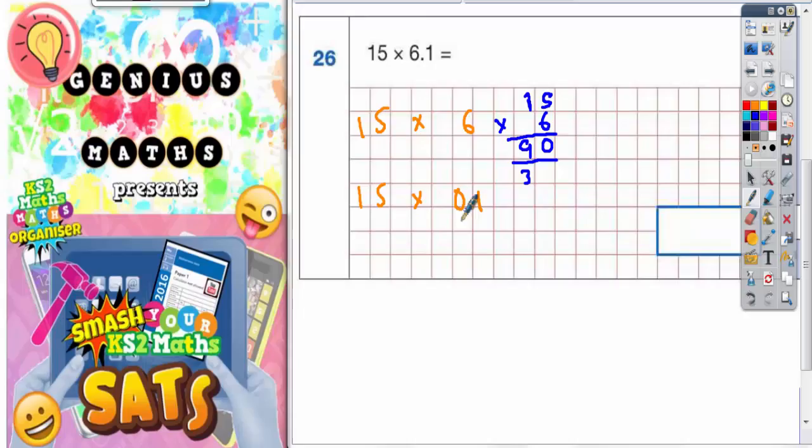Now we've got to do the 15 times 0.1. The easiest thing to do here is to think, well what would 15 times 1 be? Well, 15 times 1 would be 15. So 15 times 0.1, well 0.1 is 10 times smaller.